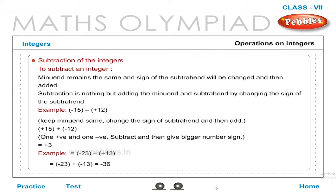Subtraction of integers: To subtract an integer, the minuend remains the same and the sign of the subtrahend is changed, then added. Subtraction is nothing but adding the minuend and subtrahend by changing the sign of the subtrahend. Example: (+15) − (−12) → keep minuend same, change sign of subtrahend and add: (+15) + (+12). One positive and one negative — subtract and give the bigger number's sign, that is equal to +3.